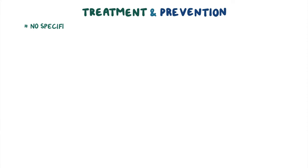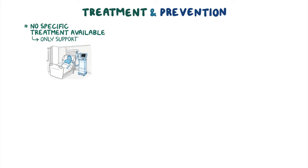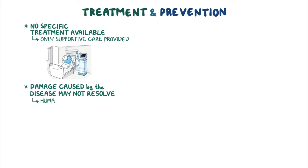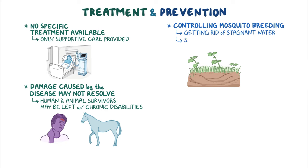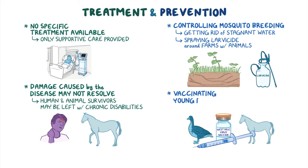Currently, there is no specific treatment available for West Nile virus infections, and so only supportive care is provided. Some of the damage caused by the disease may not resolve, so human and animal survivors of severe disease may be left with chronic disabilities. Preventative measures include controlling mosquito breeding by getting rid of stagnant water and spraying larvicides around farms, as well as vaccinating young bird flocks and horses, though there are no vaccines available for people.